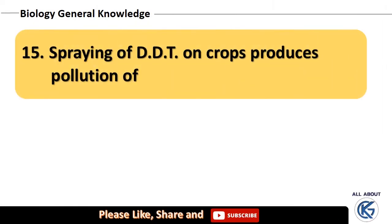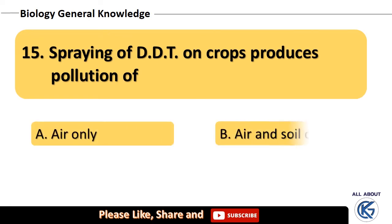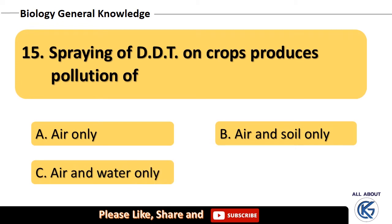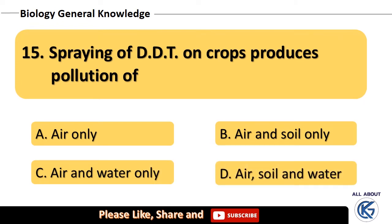Spraying of DDT on crops produces pollution of — air only, air and soil only, air and water only, or air, soil, and water? The right answer is air, soil, and water.